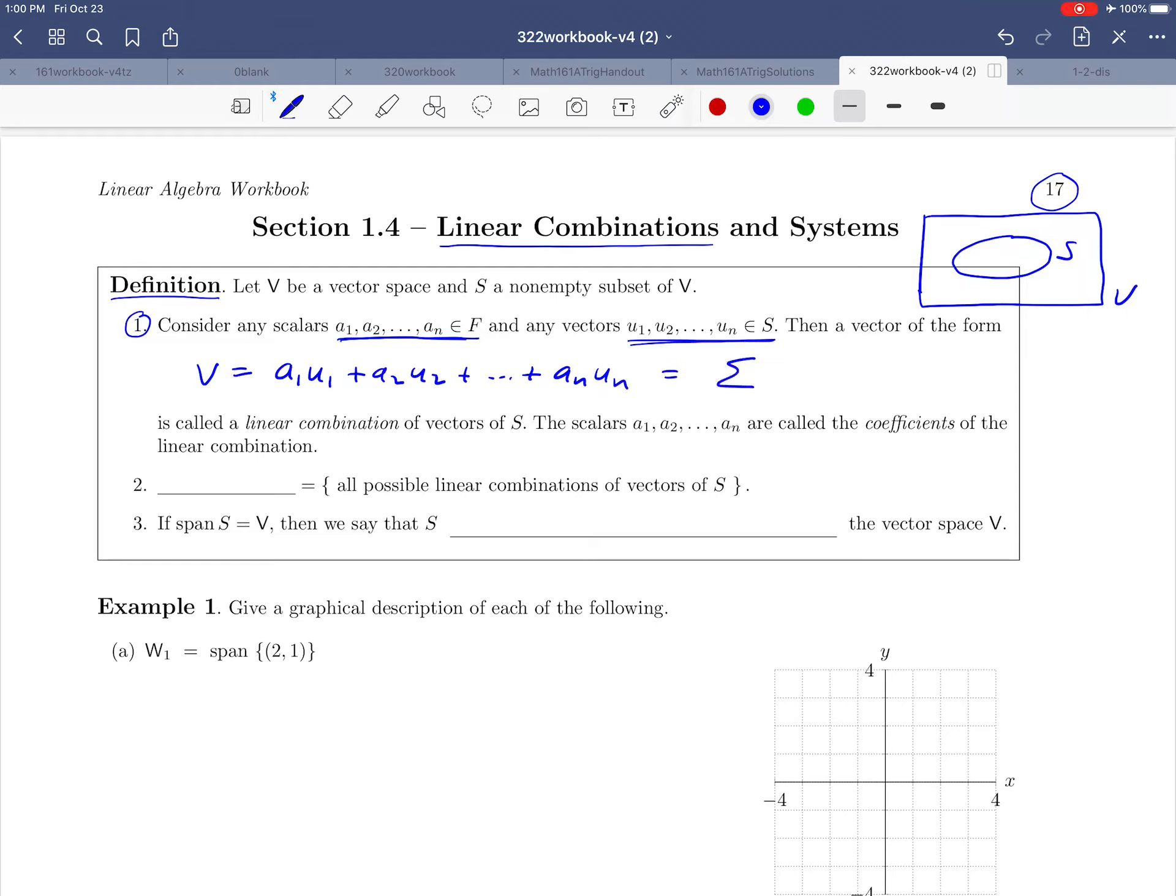We can also write that sum in sigma notation like this. The sum from, as i goes from 1 to n of aIui. And that sum that we just wrote out has a special name. It's called a linear combination of the vectors in S. It's just a way of reaching into our bag of vectors, pulling out a subset of that, and then just forming this combination that we wrote down.